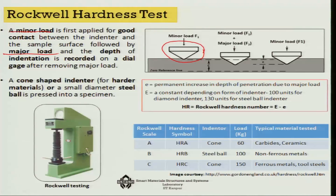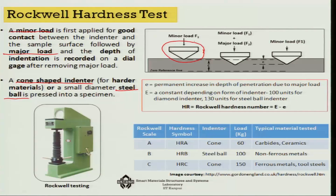The indenter is a cone-shaped indenter, generally used for harder materials, and sometimes a steel ball for relatively less hard materials. The sequence is: first apply the minor load, then apply minor plus major load, then withdraw the major load, leaving just the minor load, then withdraw all loads and measure the depth of penetration.